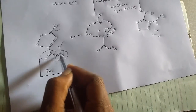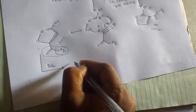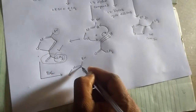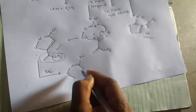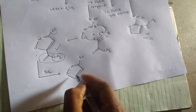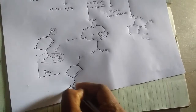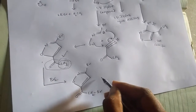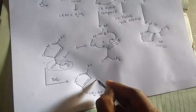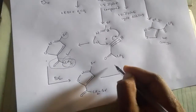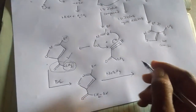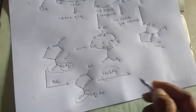On bromination of the keto methyl group, we get CH2Br from that methyl group. Next, on further reacting with NaBH4, which is a reducing agent, the keto functional group is converted into an alcohol — specifically, a secondary alcohol.